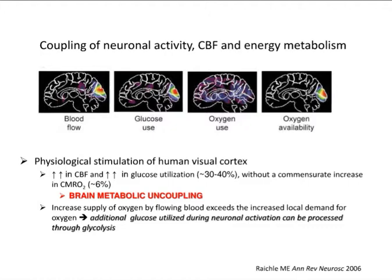This is a very important slide about the coupling of neuronal activity, cerebral blood flow, and energy metabolism, as reviewed by Reichel and Fox. When you perform physiological stimulation of the human visual cortex, you get an increase in cerebral blood flow and also an increase in glucose utilization of about 30% to 40%. However, there is no commensurate increase in CMR-O2, which goes up only about 6%.